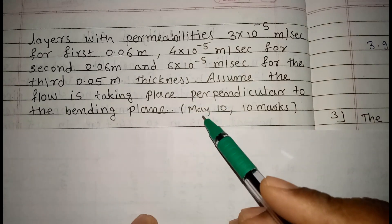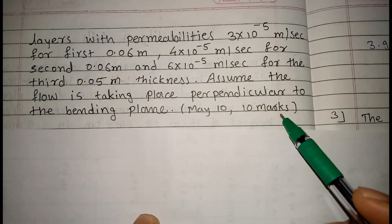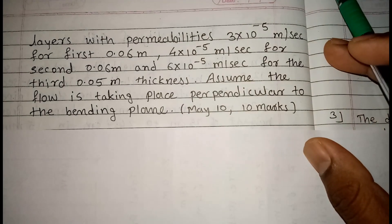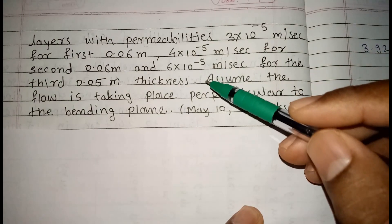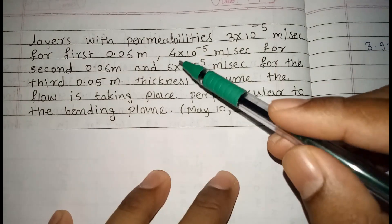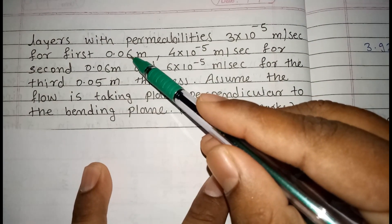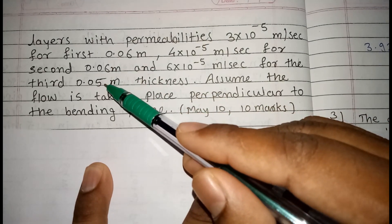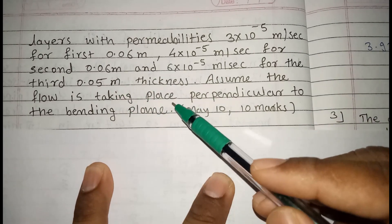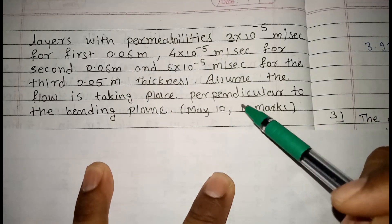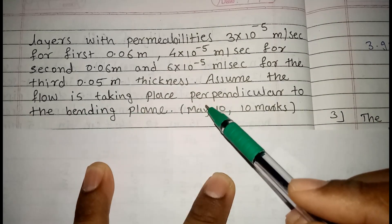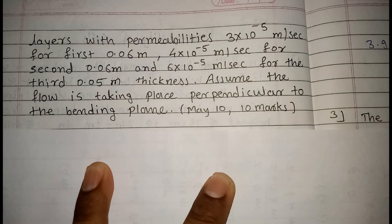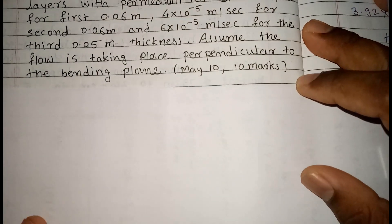This numerical was asked in May 2010 for 10 marks in Mumbai University examination. Now see here, we can see that 3 different layers are given to us, having thickness for first layer is 0.06, second layer is also 0.06, and last layer is 0.05 meter. And the flow is taking place perpendicular to the bedding plane. Here is the combination of 2 problems. We will solve one by one.